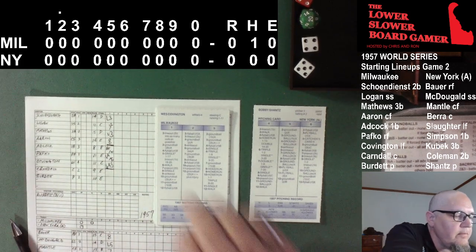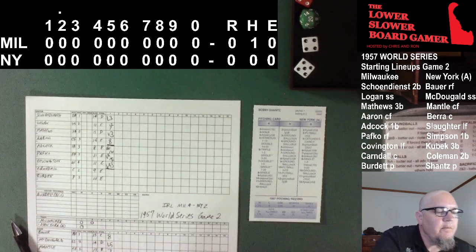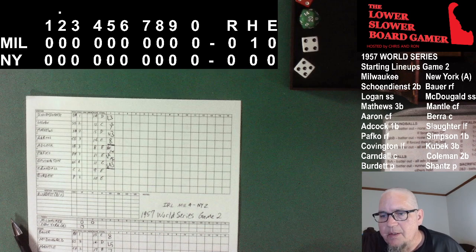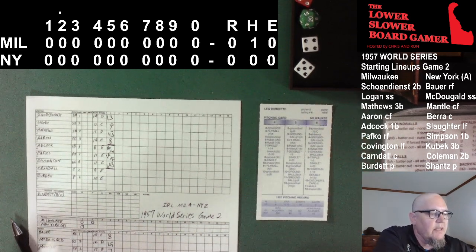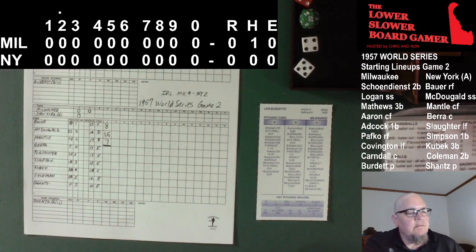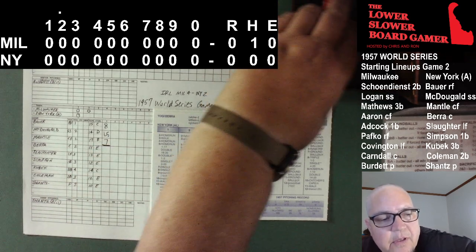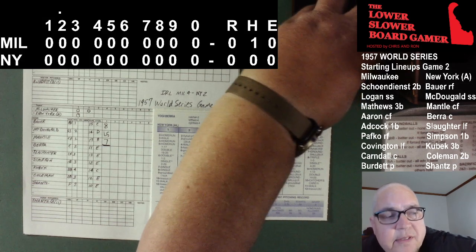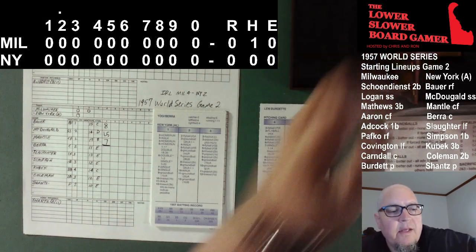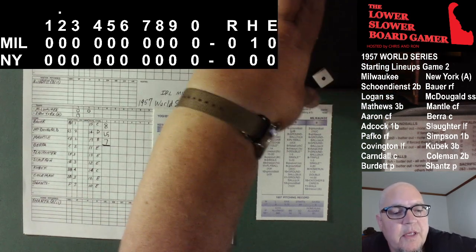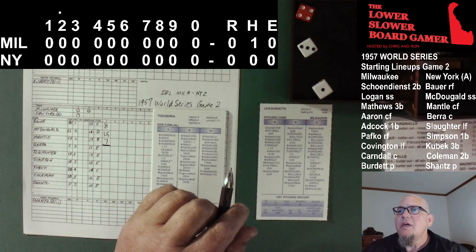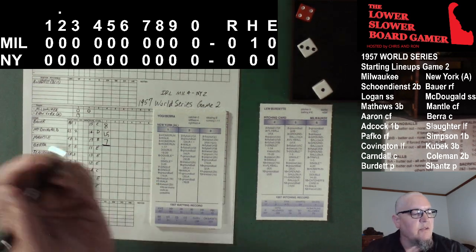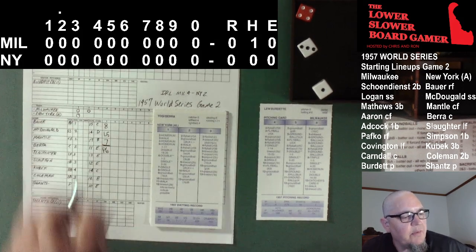Bottom of the second. Lou Burdette comes out to face Yogi Berra, Enos Slaughter, and Harry Simpson. Burdette is warmed up. Yogi Berra steps in. Here's the windup, the pitch — 4-4. Pops it up in the center of the infield. Logan calls off Shane Dean, has a better angle, and makes the play. The shortstop does so for out number one.